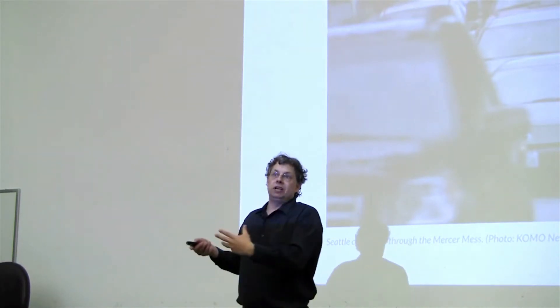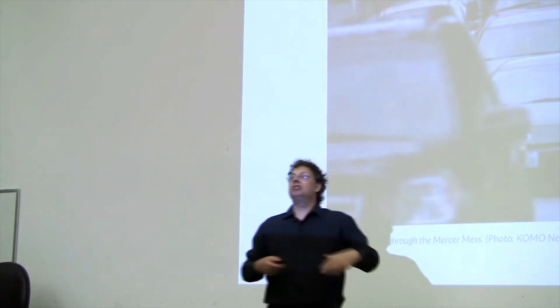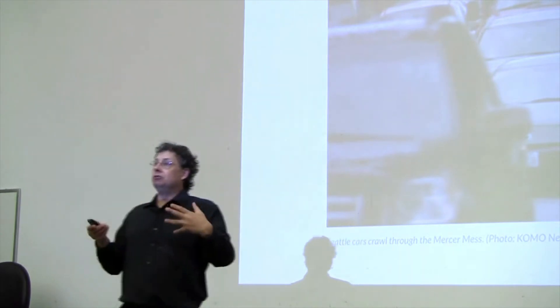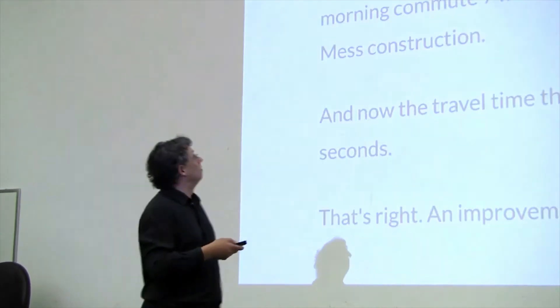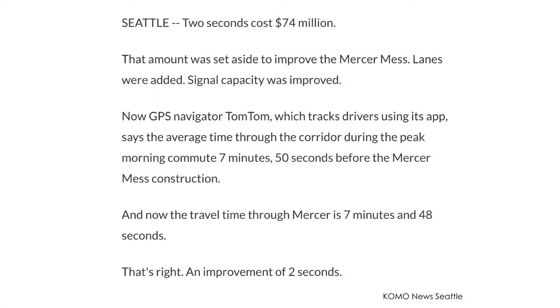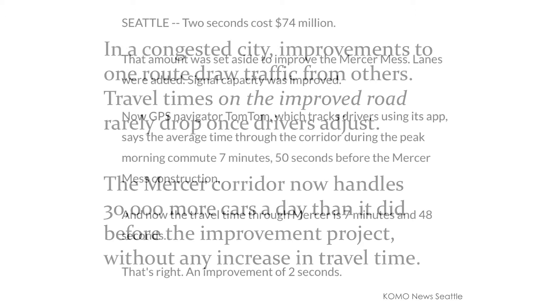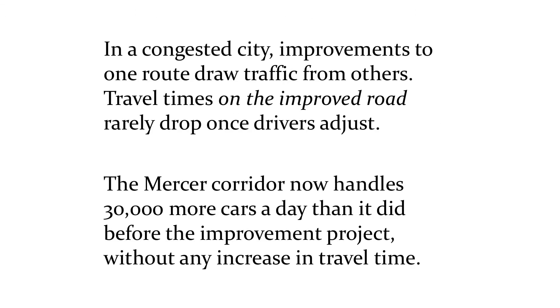What they said is, well, look, we agreed to try to clean this mess up. We spent $74 million, and now your travel times are only two seconds faster along the Mercer mess. And the implication, two seconds cost $74 million. The implication, look at the wasteful government spending.